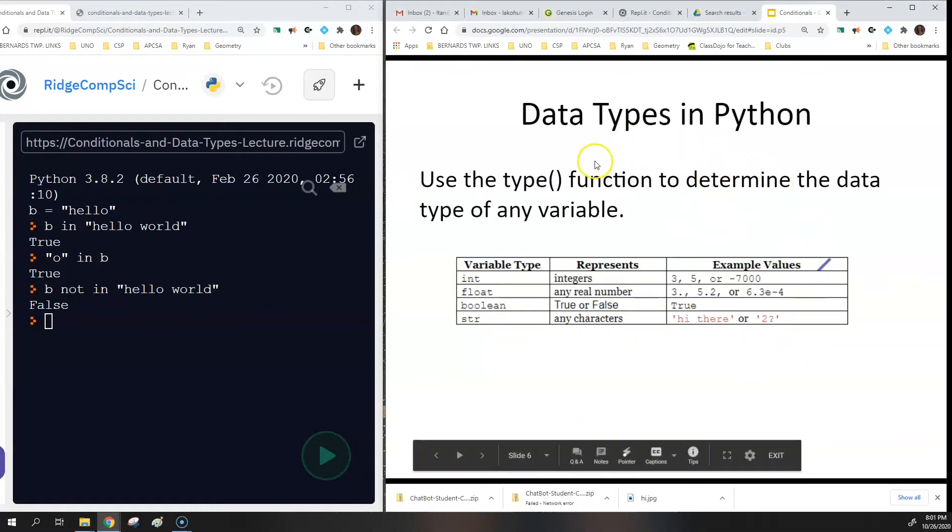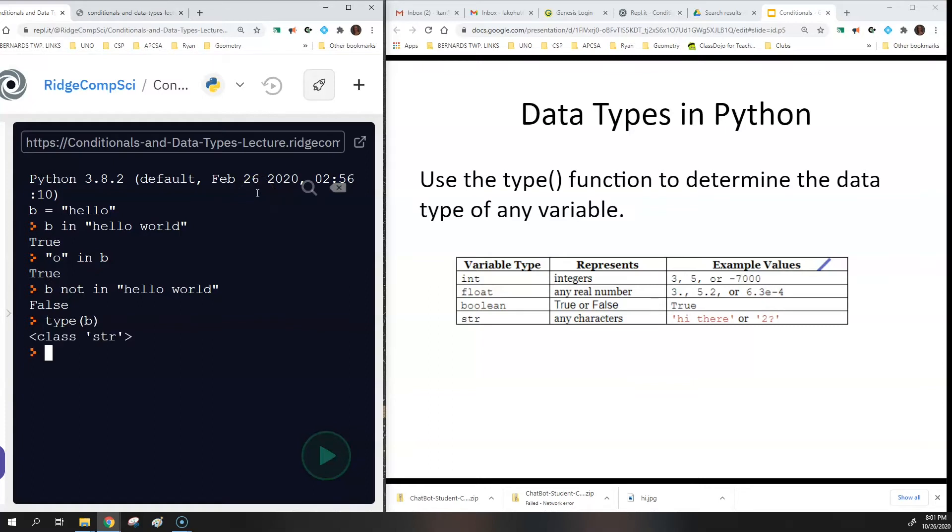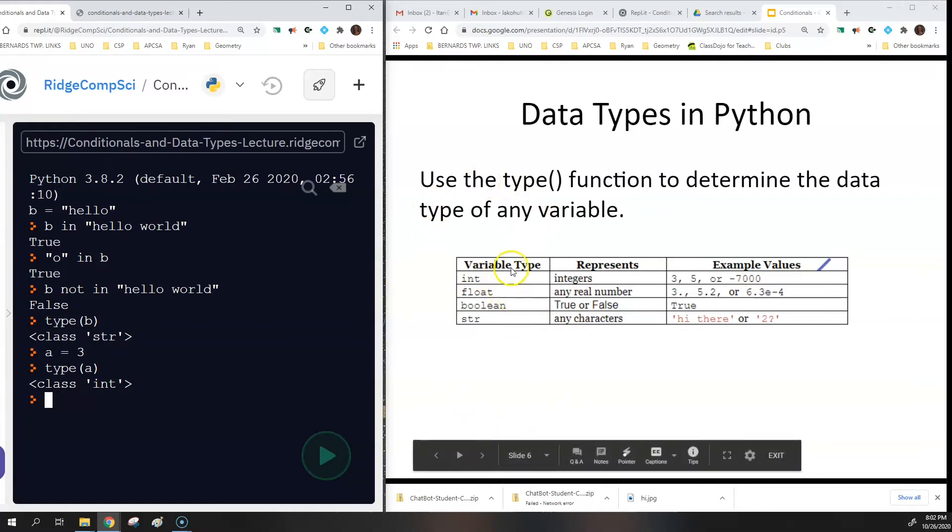So now let's talk about data types in Python. We use the type function in order to determine what type of data a certain variable is. So for example, if I did type and then B, B is a variable, then it tells me it's of class STR. That means it's a string. Now if I went back and redeclared A as three and then I did type A, A would be of type integer. So these are the four native types of variables in Python: int, float, boolean, and string. String is characters. Boolean is true or false. Float is any real number, so it can be any decimal value. And integers are integers.